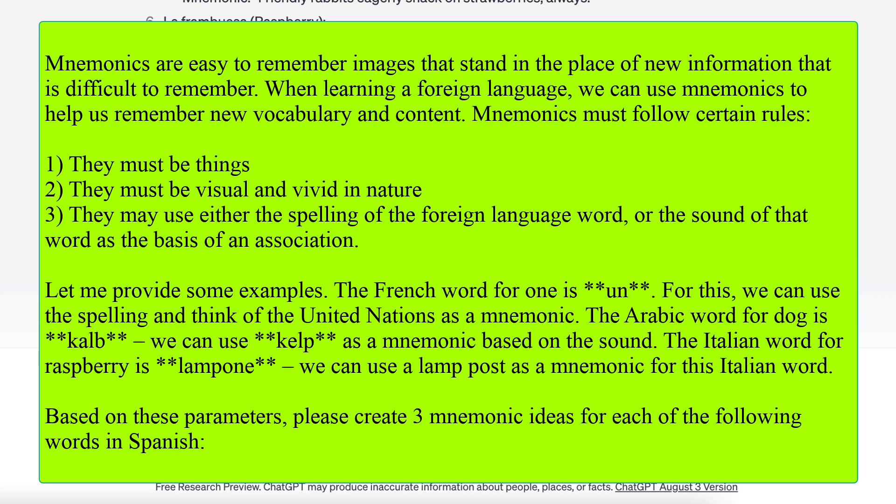Let me provide some examples. The French word for one is 'un' — for this we can use the spelling and think of the United Nations as a mnemonic. The Arabic word for dog is 'kelb' — we can use 'kelp' as a mnemonic based on the sound. The Italian word for raspberry is 'lampone' — we can use a lamp post as a mnemonic for this Italian word. Based on these parameters, please create three mnemonic ideas for each of the following words in Spanish.